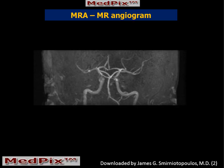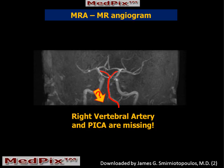Looking at the MR angiogram, we can see the normal signal from the internal carotid arteries. But if we look carefully at the posterior circulation, we can see the left vertebral artery, the basilar, and the posterior cerebral arteries.